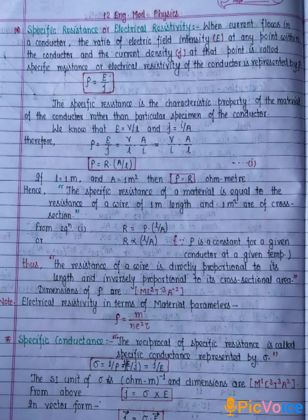The specific resistance is the characteristic property of the material of the conductor rather than particular specimen of the conductor.